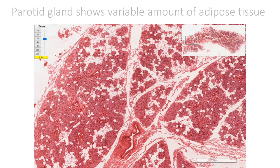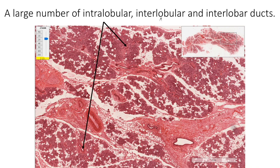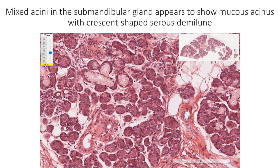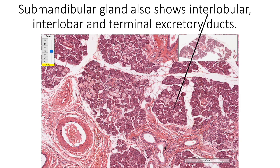The parotid gland shows a variable amount of adipose tissue and a large number of intralobular, interlobular, and interlobar ducts. The submandibular gland shows predominantly serous acini, few mucous acini, as well as mixed acini. The mixed acini in the submandibular gland appear as a mucous acinus with a crescent-shaped serous demilune. The submandibular gland also shows intralobular intercalated and striated ducts, as well as interlobular, interlobar, and terminal excretory ducts — the latter called Wharton's duct.